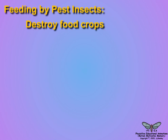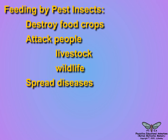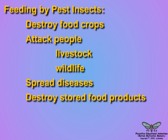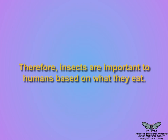Pest insect species eat food crops, attack people, livestock, and wildlife, spread diseases, eat and contaminate stored food products, and even eat household products and wooden structures. Therefore, insects are important to human life based upon what they eat.